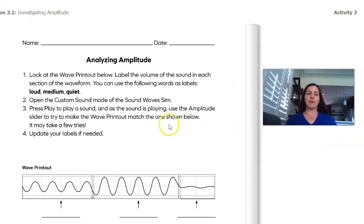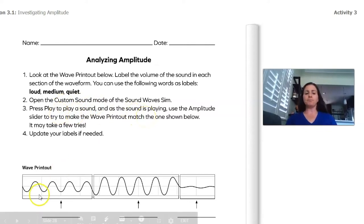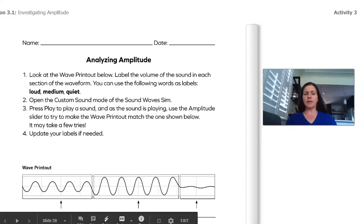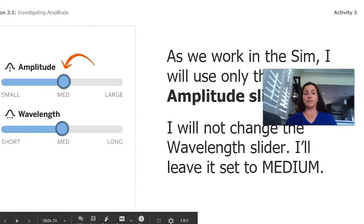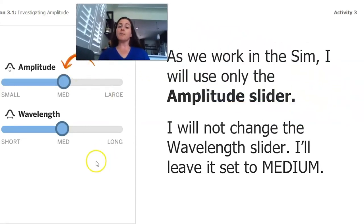So I've zoomed in on that page. We're going to look at the wave printout below. We're going to label the volume of the sound in each section of the waveform, and we can use the following words as labels: loud, medium, and quiet. So I'm going to open the custom sound mode, same place. I'm going to press play, then I'm going to use the amplitude slider again, and I'm going to try to match these waves. And then we're going to update our labels. So just a note, I'm only going to mess with the amplitude slider. I'm not going to change the wavelength one. I'm just going to leave that at medium for now.